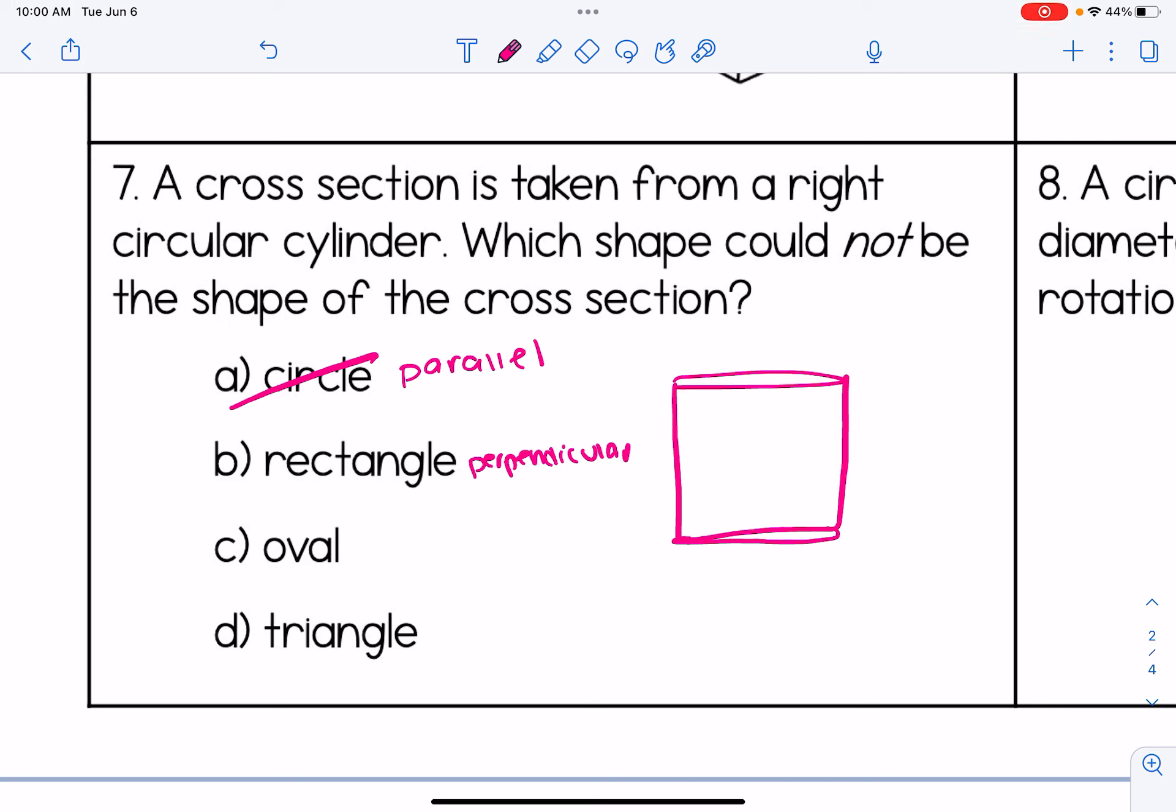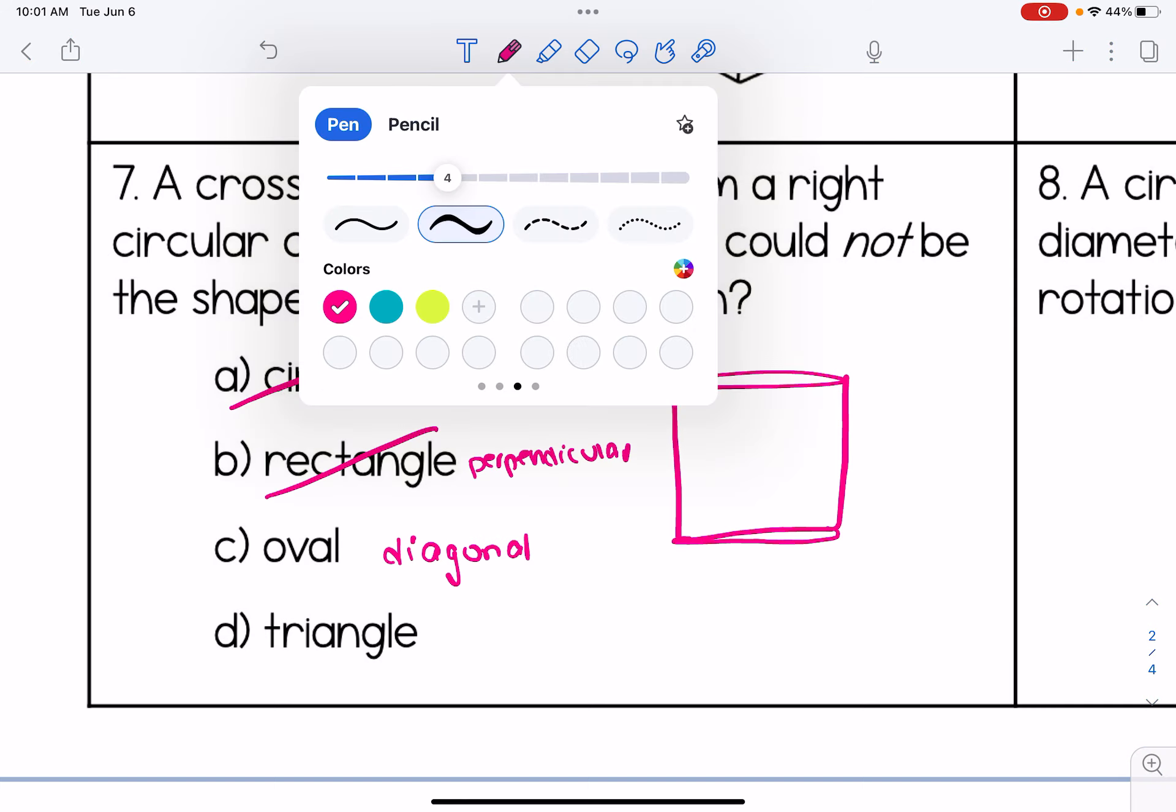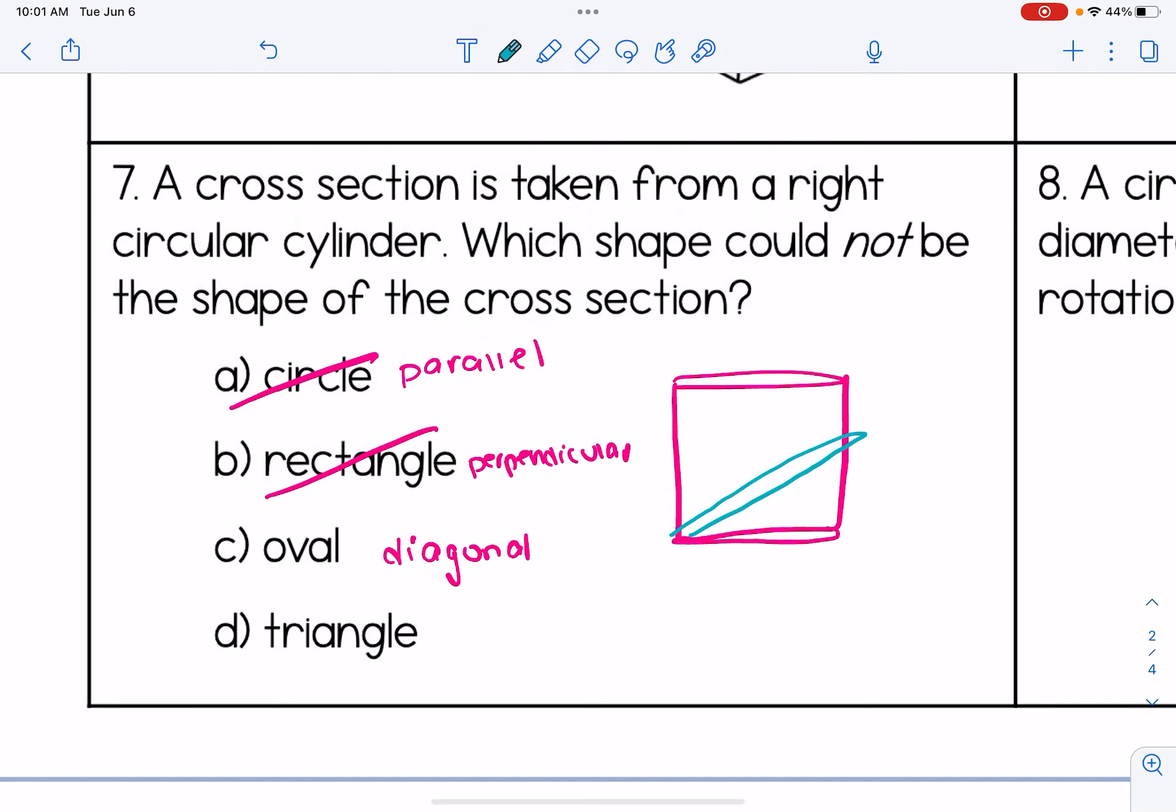If you think about, like, a can of soup, it's cylindrical, right? But if you unwrap the label, it's shaped like a rectangle, so you can associate that with a cylinder. So rectangle is definitely possible. An oval is possible, too, because we can take a cylinder and slice it diagonally. Like, I could go in here, slice it diagonally, and I'm going to get an oval shape. So that's possible. But it's not possible for me to take a slice of a cylinder and end up with a triangle. So my answer is choice D.